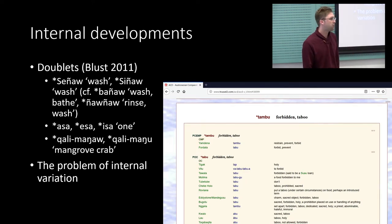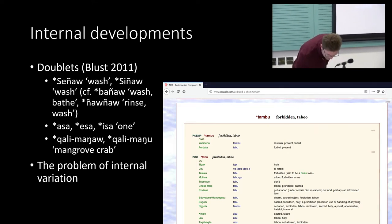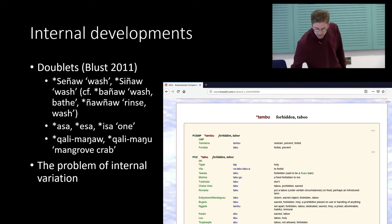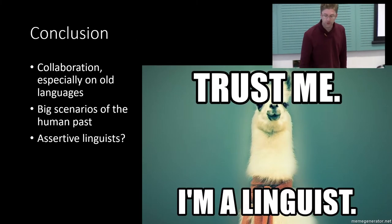So that is a bit of a problem for the sort of non-linguists who want to use Austronesian reconstructed data for their own work, because some reconstructions maybe shouldn't be there or shouldn't be made, but of course, who decides these things, right? I mean, there's no high Supreme Court of historical linguistics or anything like that. So it's also one of the things I come across.